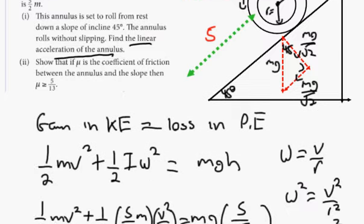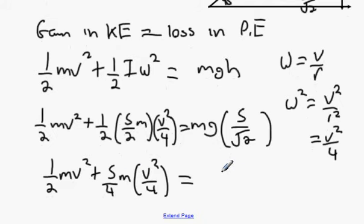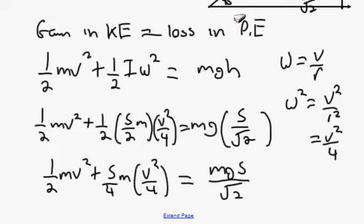So we'll have 5/4 × M × v²/4 equals M·G·S over root 2. We can see the two 4's in the denominator — that changes it into 16. So it becomes 5Mv²/16.